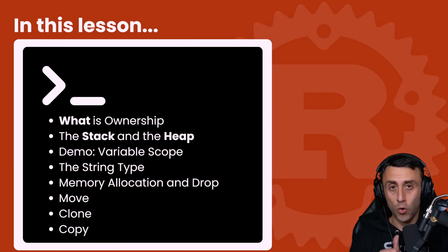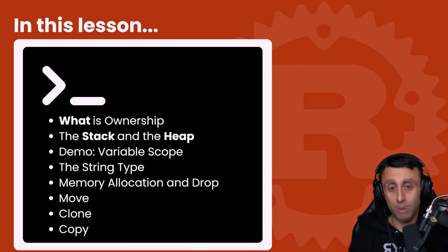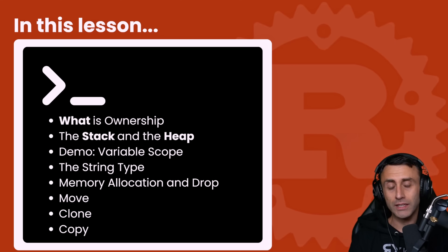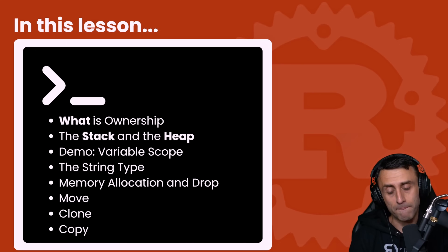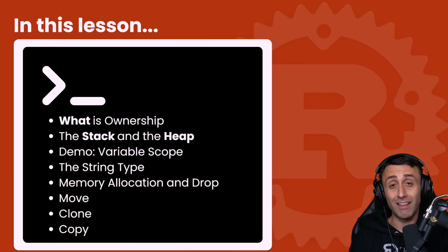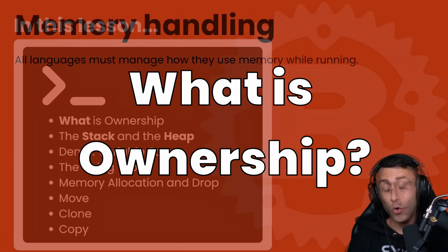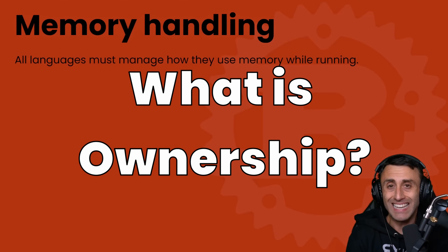In this lesson we will cover: what is ownership, what is the stack and what is the heap, a simple demo of variable scope, and then the String type. We have worked so far with something called string literals; the String type with a capital S is actually a type in Rust and it is a bit special. Then we'll talk about memory allocation and the drop trait, the move trait, clone, and copy.